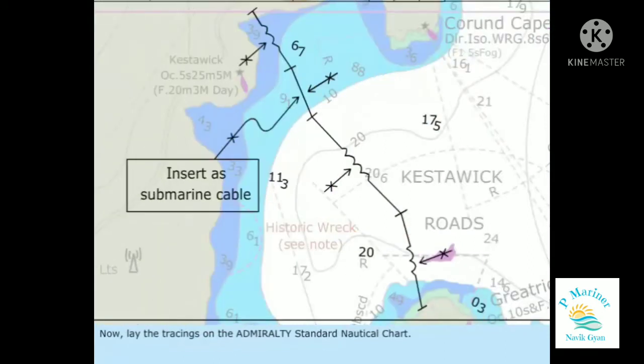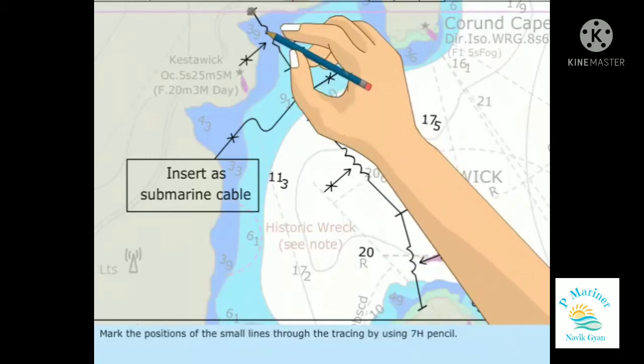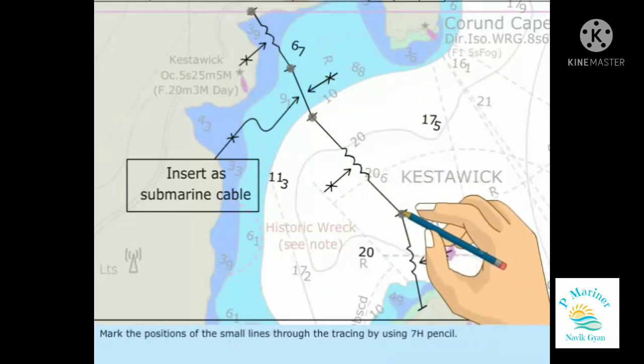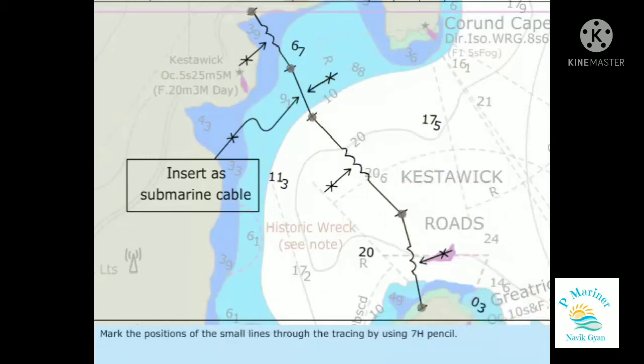Lay the tracing on the Admiralty standard nautical chart. Mark the positions of the small lines through the tracing by using the 7H pencil.